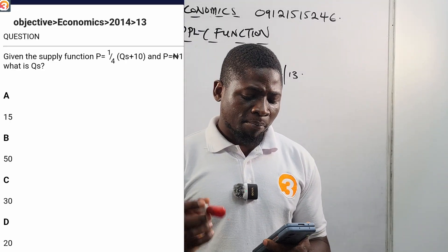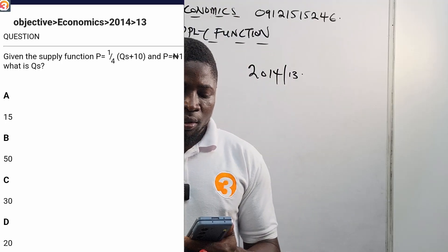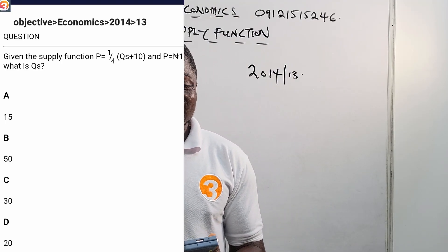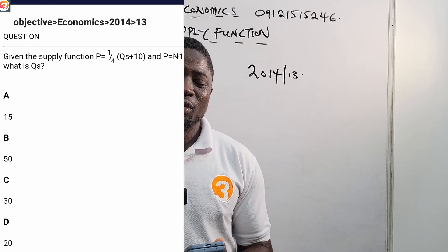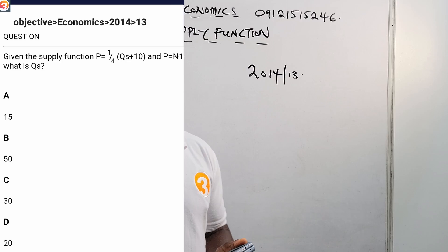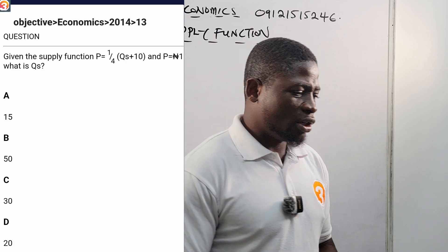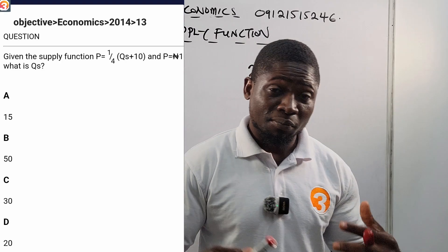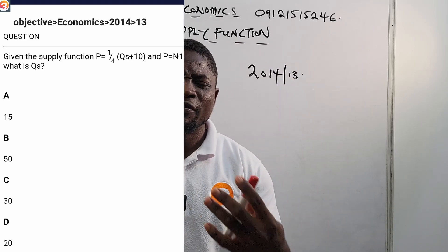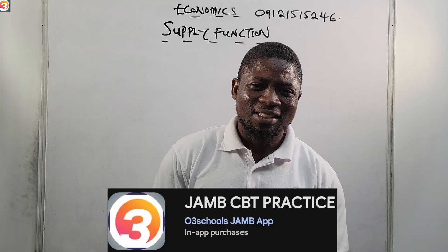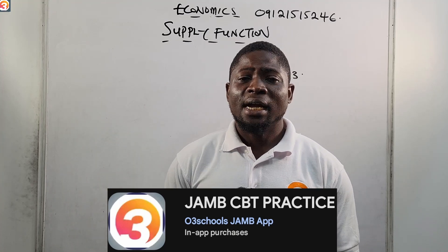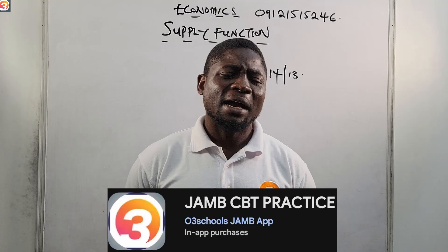The question says: given the supply function P equals 1 over 4 into QS plus 10, and P equals 10 naira, what is the quantity supplied — what is QS? We'll come back to this question and many more at the end of class, because at O3 Schools we believe in giving you value first. Let us teach you first; once we have taught you, answering questions will be the least of your problems.